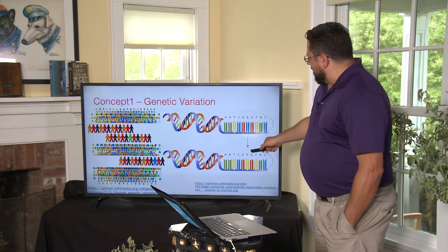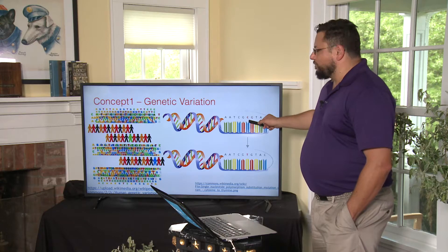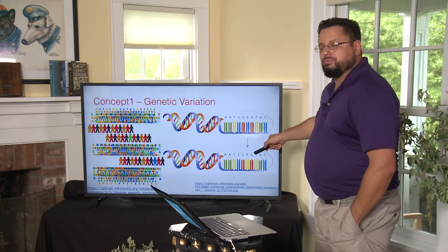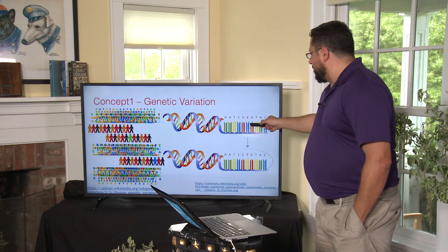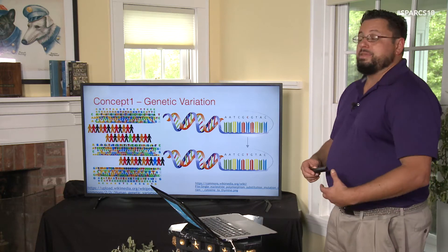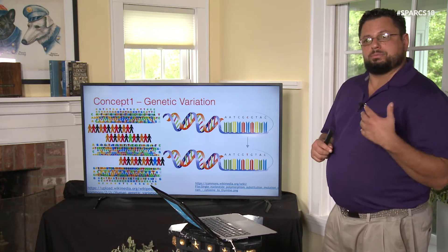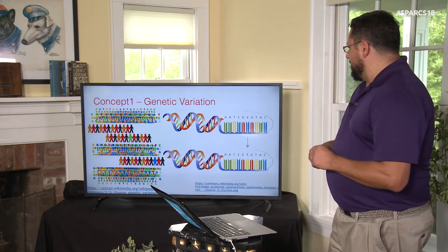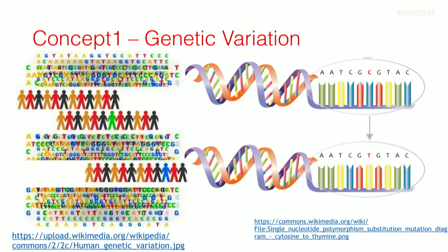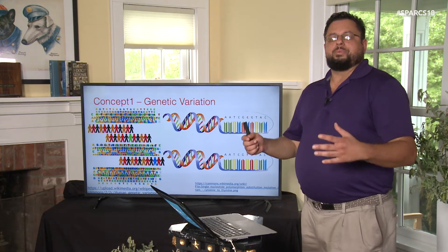If we grab a wolf puppy that has a C, and that C encodes a particular trait, and then we breed siblings together that are homozygous C, we end up with a subpopulation of wolves that don't have the T at all. That's what artificial selection is — we reduce genetic variation by taking a subset of it.